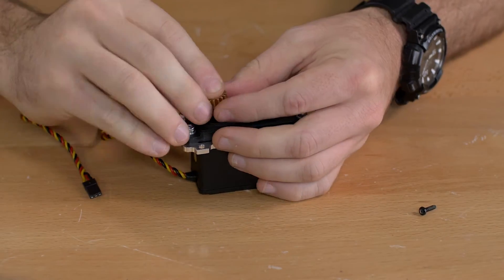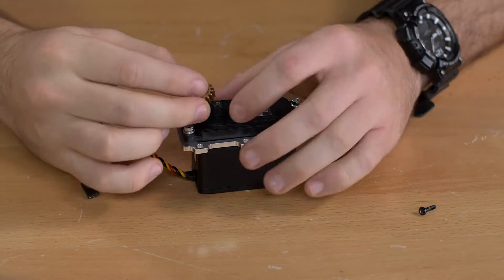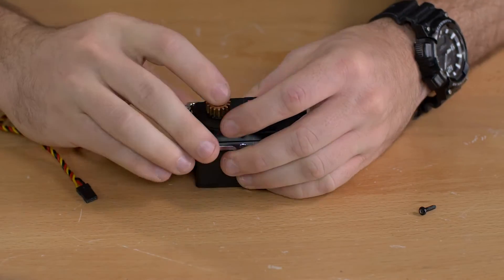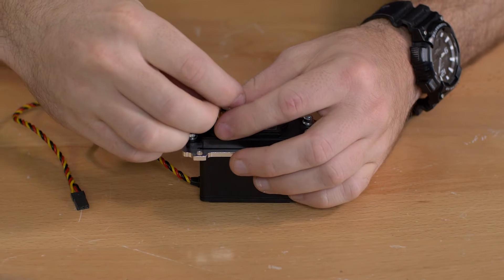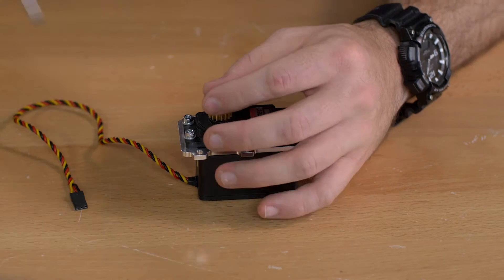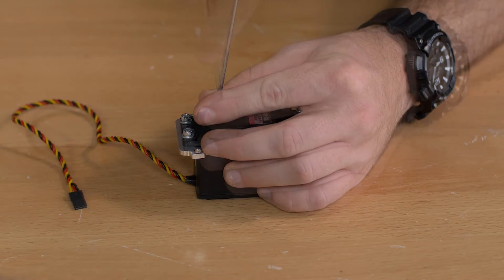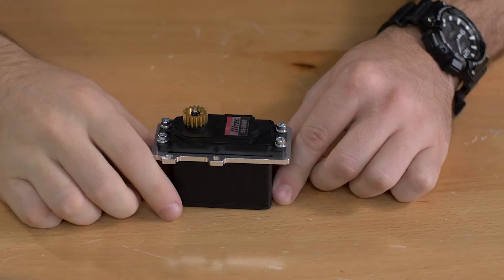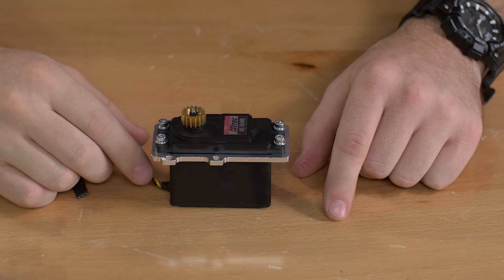And once we finish that we need to add the gear to the top of the servo. We'll just use a Phillips head screwdriver to finish that off. Once that's done we're going to put that off to the side and move on to the next step.